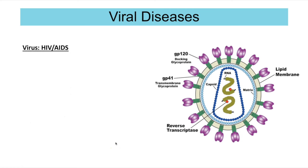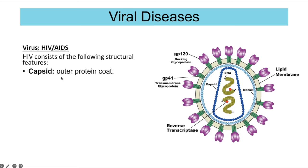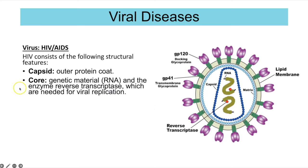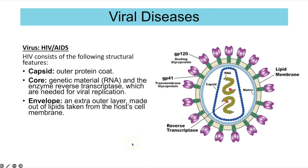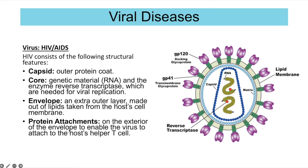The key viral example you need to know is HIV. It consists of a capsid — the outer protein coat surrounding the genetic material — which is RNA in HIV's case. The enzyme reverse transcriptase is also within the capsid and is needed for viral replication. There is an envelope layer, an extra outer layer made of lipids taken from the host's cell membrane, and protein attachments on the exterior of the envelope that enable the virus to attach to the host's helper T cells.